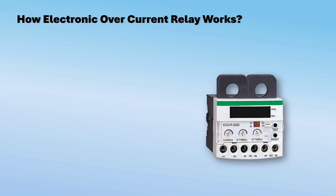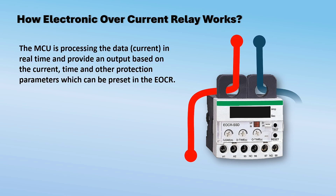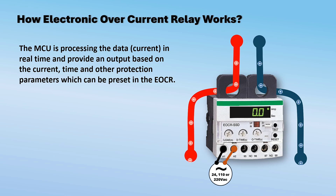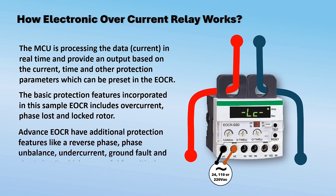How the electronic overcurrent relay works: the MCU processes the current as data in real time and provides an output based on the current, time, and other protection parameters which can be preset in the EOCR. The basic protection features incorporated in this sample EOCR include overcurrent, phase loss, and locked rotor. Advanced EOCRs have additional protection features like reverse phase, phase unbalance, undercurrent, ground fault, and short circuit, which are useful for critical equipment.